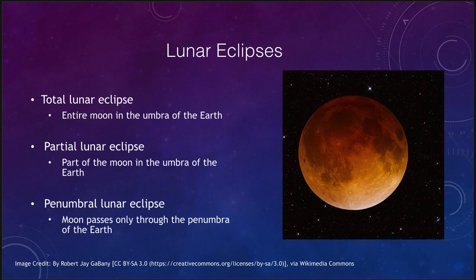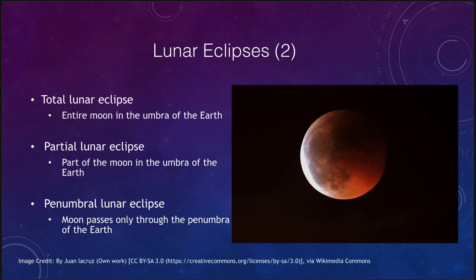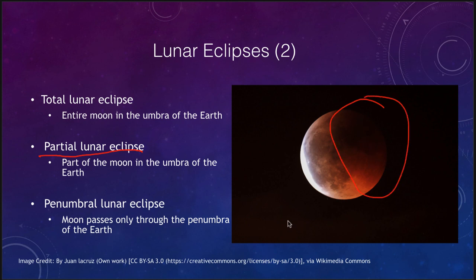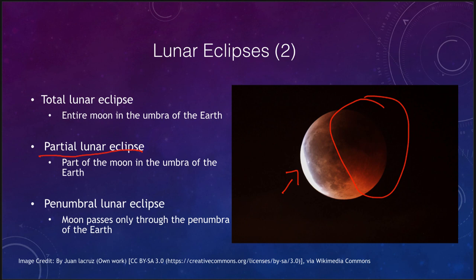In a partial lunar eclipse, part of the moon is in the umbra and part is not. The portion in the umbra is dark and reddish, while the side still being illuminated directly by the sun looks brighter. You'll still get some reddish color, especially if most of the moon is within the earth's shadow. If very little of the moon is hidden within the earth's shadow, you would not be able to see the red because it would be too faint compared to the rest of the moonlight, which would overwhelm it.